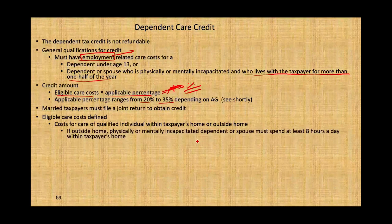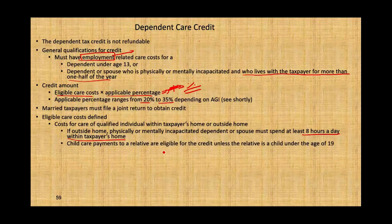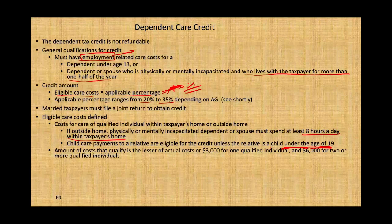If care is provided outside the home for someone physically or mentally incapable of self-care, the dependent or spouse must spend at least eight hours a day within the taxpayer's home. Child care payments to a relative are eligible for the credit unless the relative is a child under the age of 19. The amount of cost that qualifies is the lesser of actual cost or $3,000 for one qualifying individual and $6,000 for two or more.